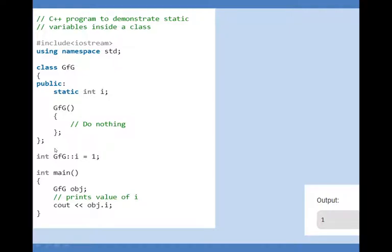Integer gfg scope resolution operator i is equal to one, so we are initializing the value of the static variable to one.